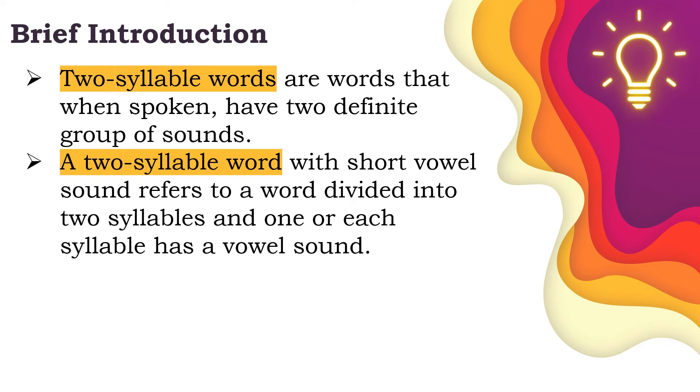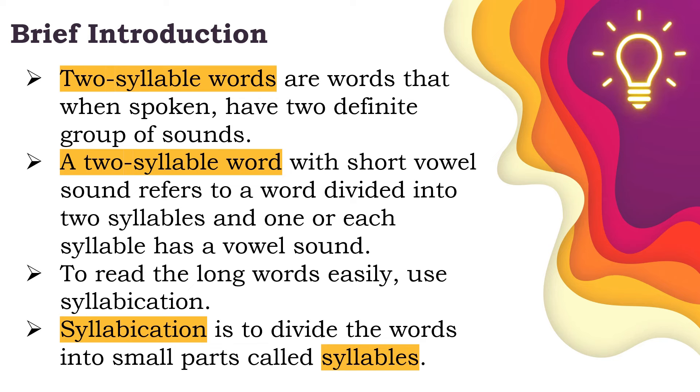A two-syllable word with short vowel sound refers to a word divided into two syllables and one or each syllable has a vowel sound. To read the long words easily, use syllabication. When we say syllabication, it is to divide the words into small parts called syllables.